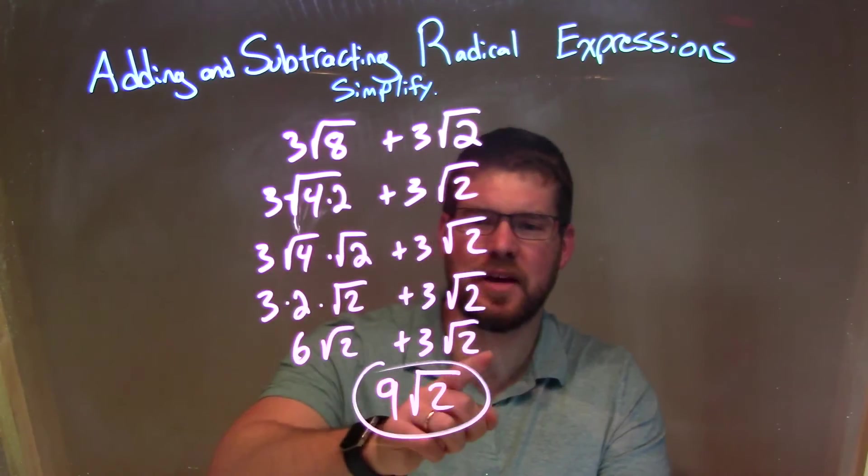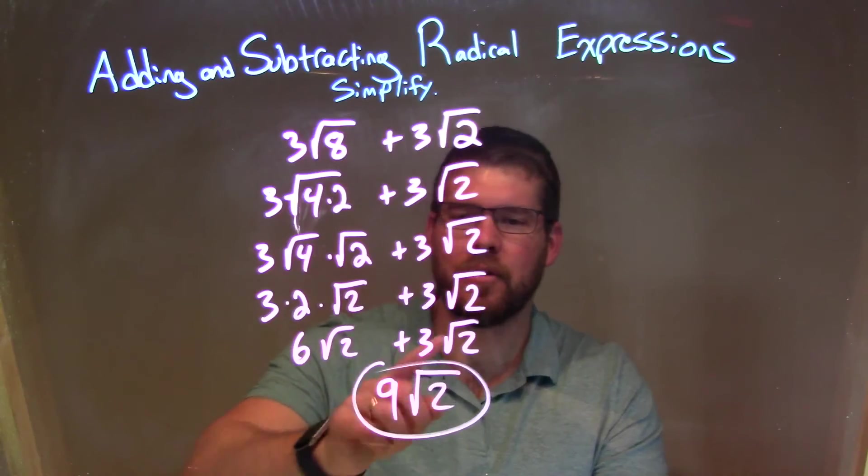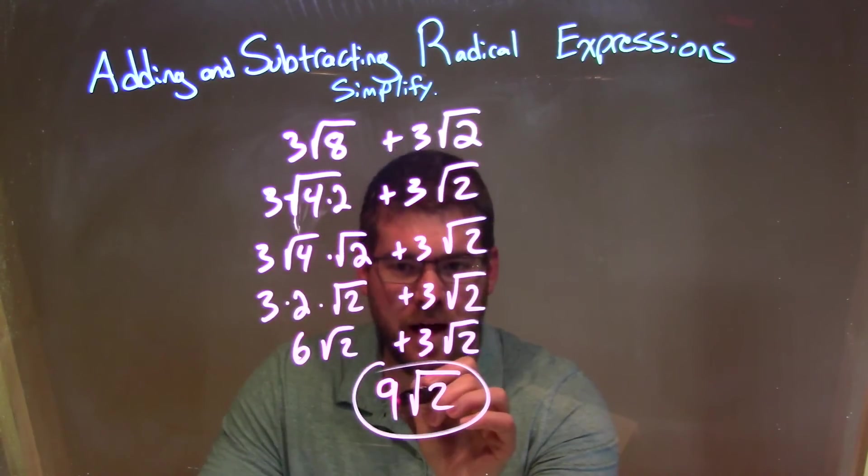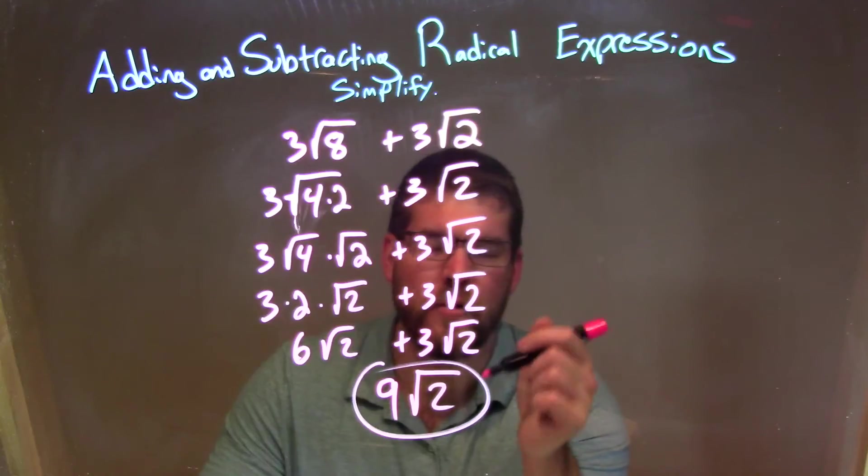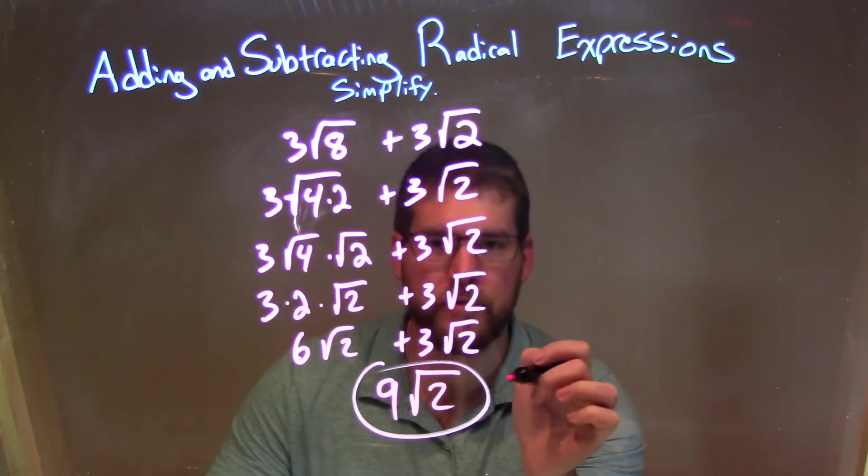At this point, we have the same square root of 2, we can add the numbers in front of them, which together brings me a 9, bringing that square root of 2. And so my final answer here is just 9 times the square root of 2.